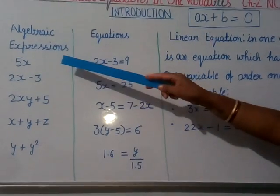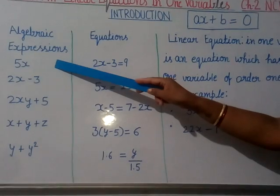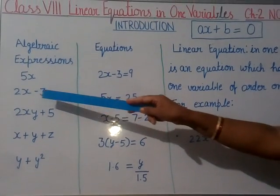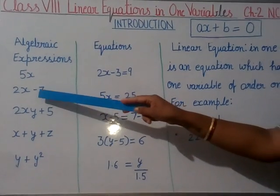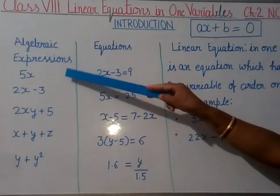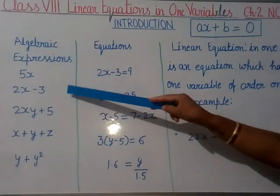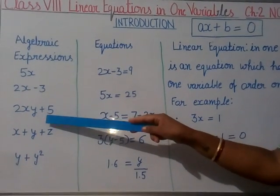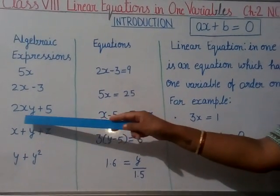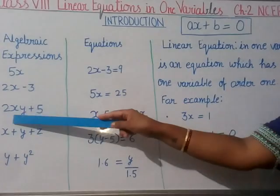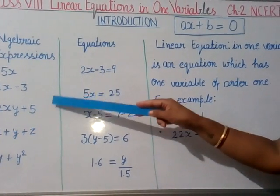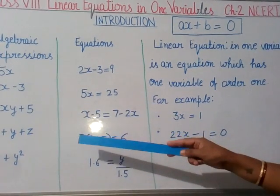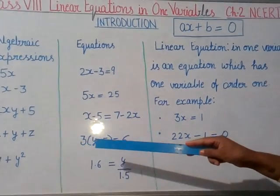Now, once again observe. In 5x, 5 is constant and x is variable. Similarly, in the second example, 2 and 3 are constant and x is variable. Only one variable in first and second examples. In the third example, 2xy plus 5, here x and y, there are two variables. Here, we will focus only on variables. How many variables are there in any particular algebraic expression?